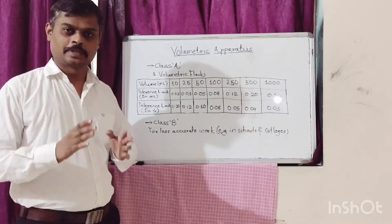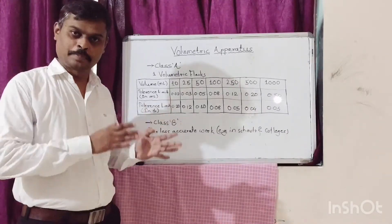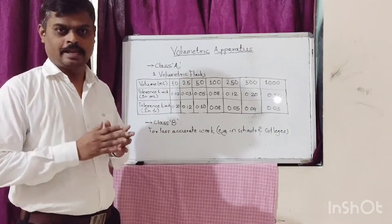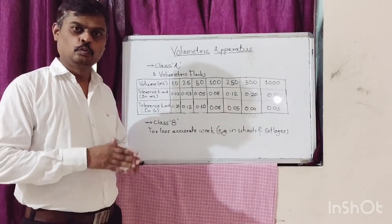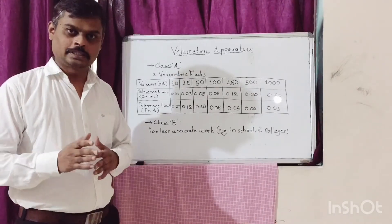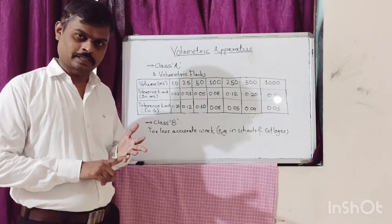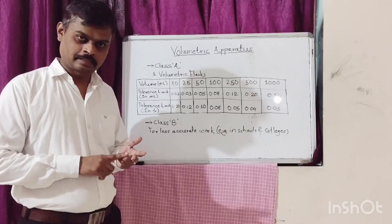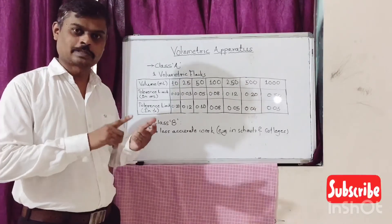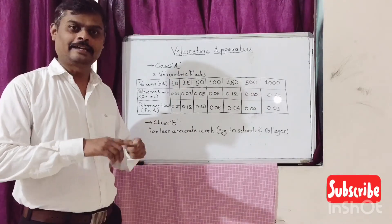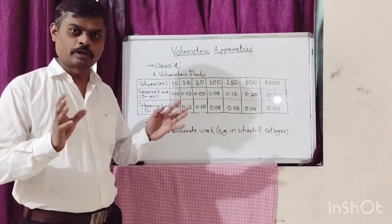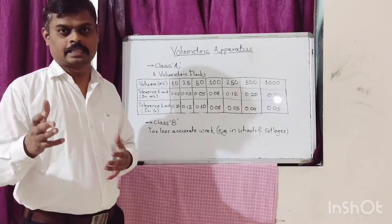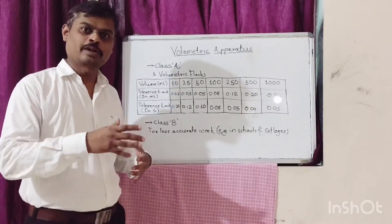Glassware calibrations are generally done at temperatures between 20 to 25 degrees Celsius. Hence, it is recommended to minimize volumetric error by ensuring that the volumetric apparatus used for analysis, the material to be analyzed, the solvents and diluents, and the laboratory environment are all maintained between 20 to 25 degrees Celsius to get more accurate results.